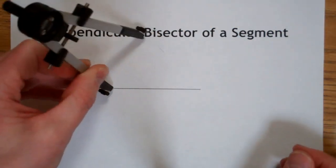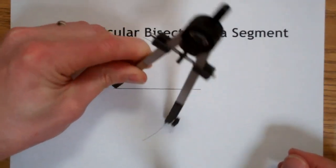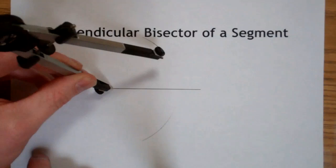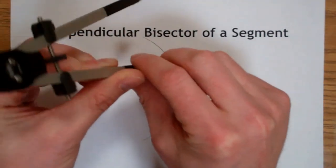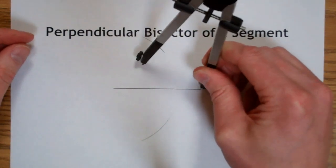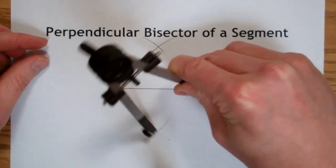I'm going to make an arc above and below the line with my point stabbed into one endpoint. I'm going to move my point to the other endpoint, stab it in, and make intersecting arcs above and below the segment.